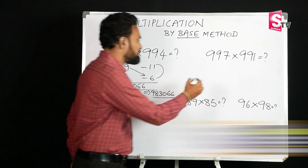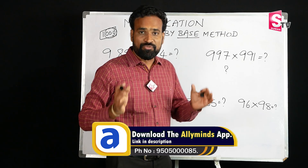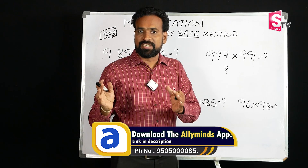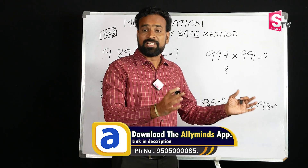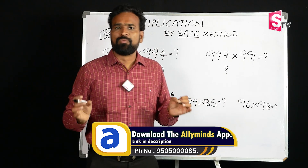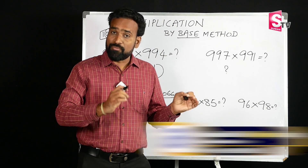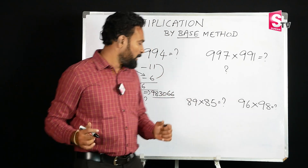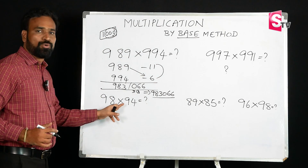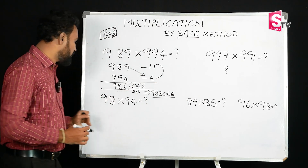If you have any problem with this, please ask in the comment section. Vedic Mathematics is much faster than school methods. Let's look at the next example: 98 times 94.